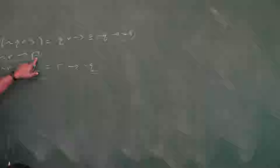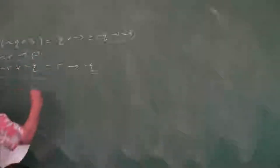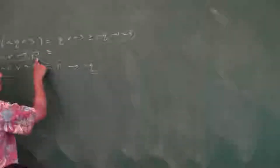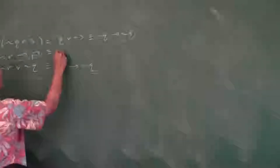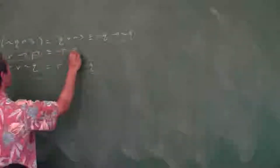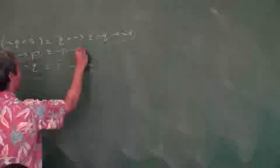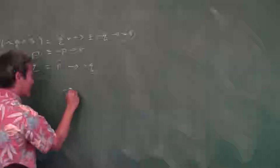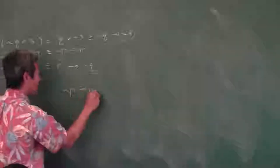Let's start with the P. But P doesn't start the chain, so we need to contrapositize this. The contrapositive of NOT R implies P is NOT P implies R. So we've got NOT P implies R.